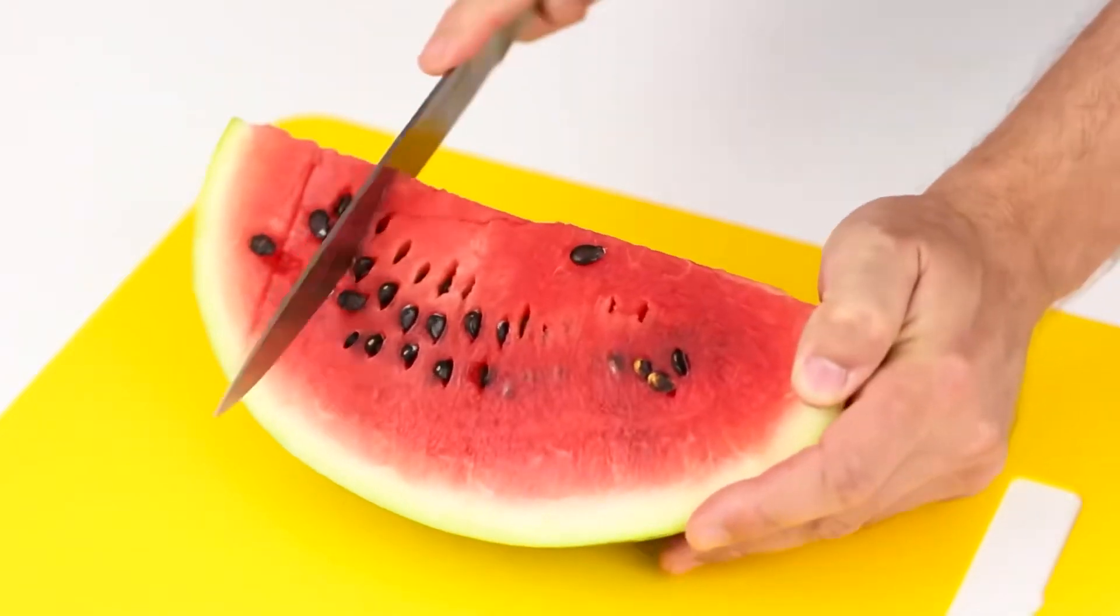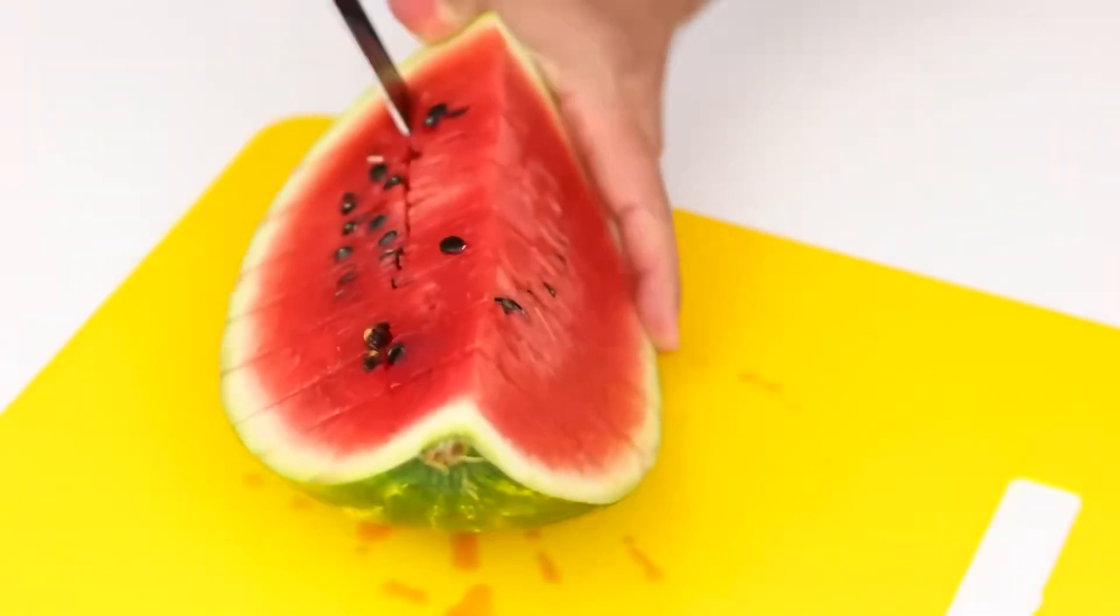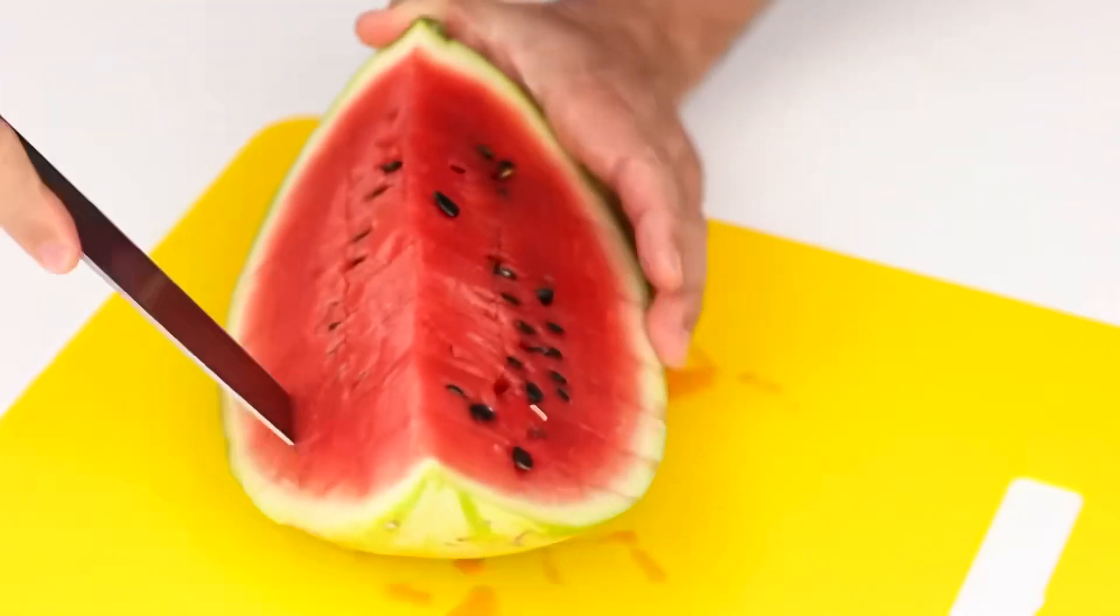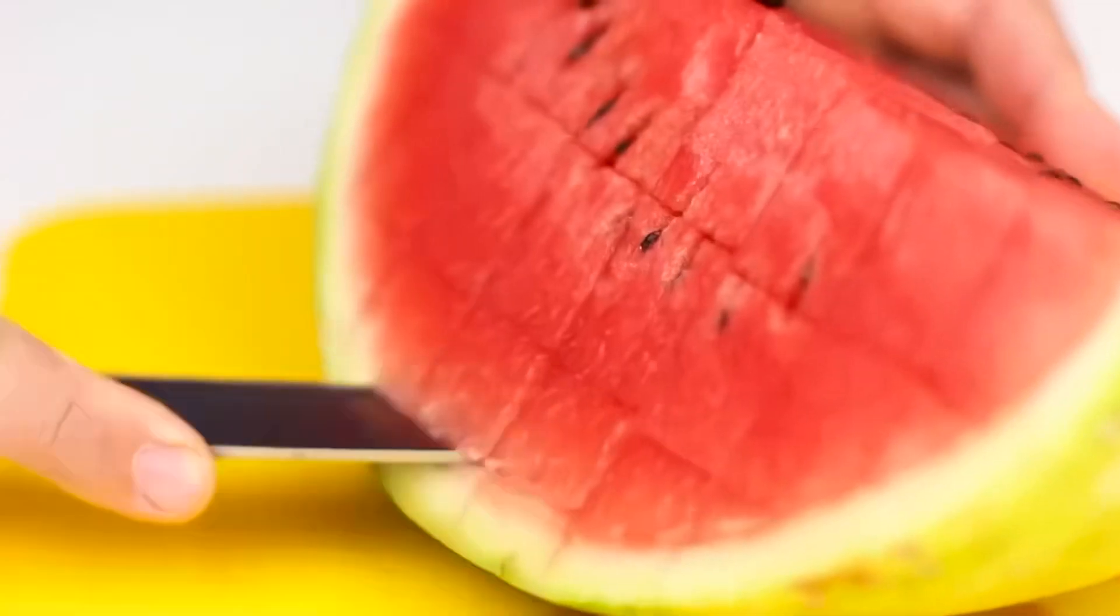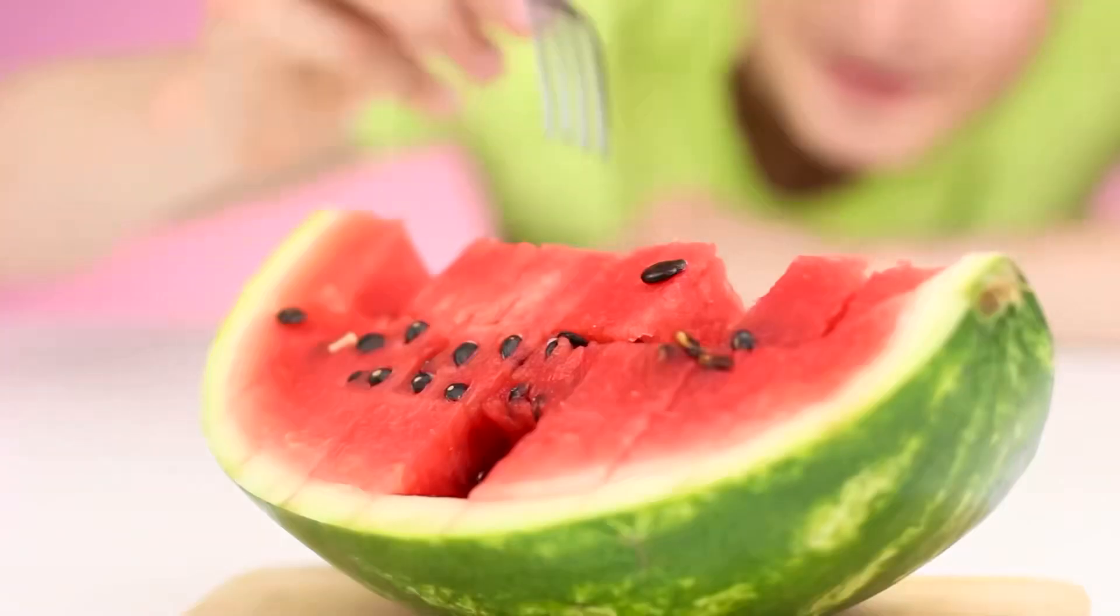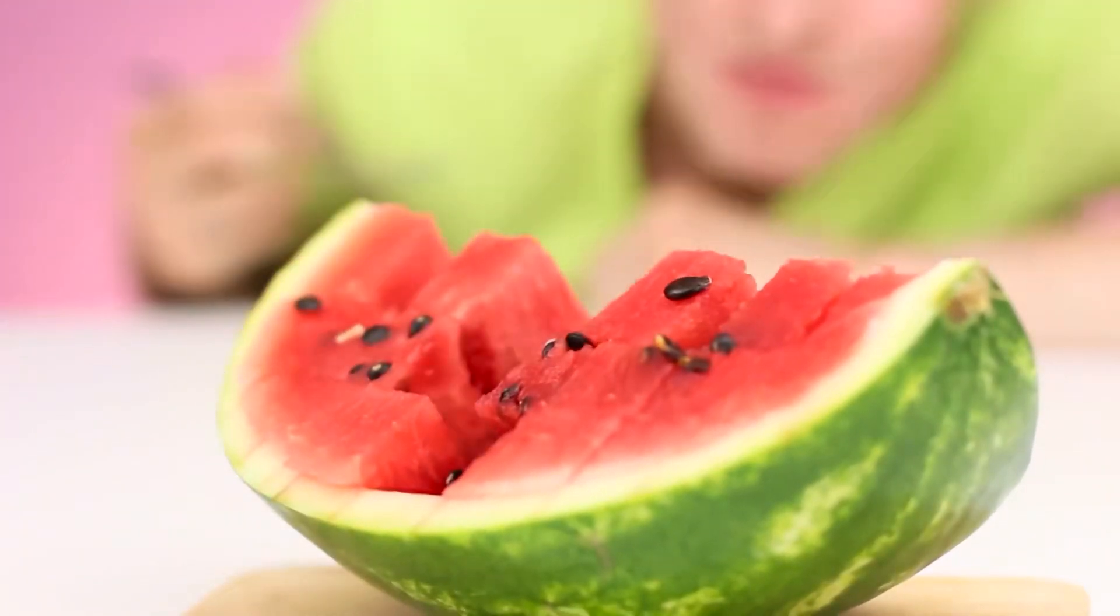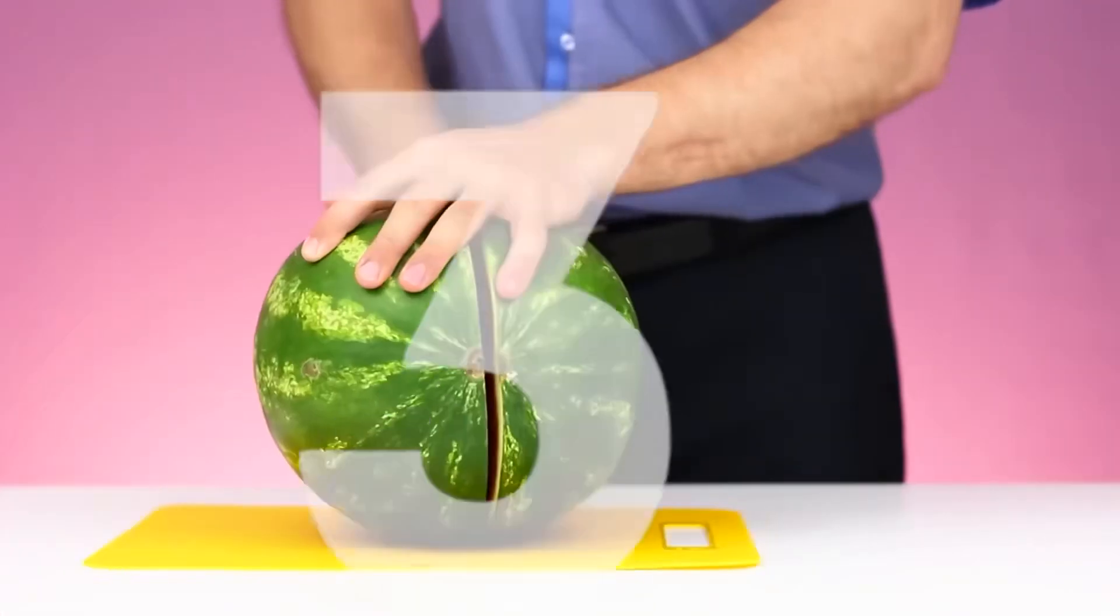For the second method, we will need a quarter of a watermelon. To begin with, we make several vertical incisions. Now we make horizontal incisions to get watermelon cubes. Now separate the pulp from the crust. Slicing is ready and the crust will be served as a plate. It's easy to pick up watermelon cubes with a fork.